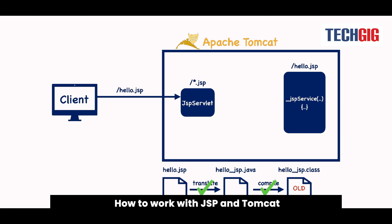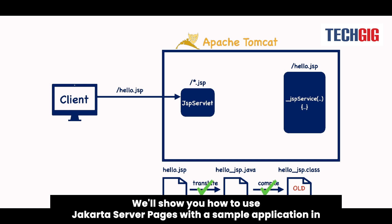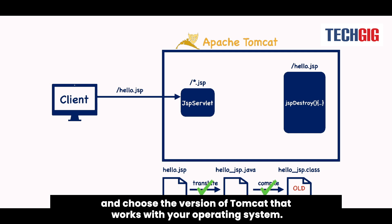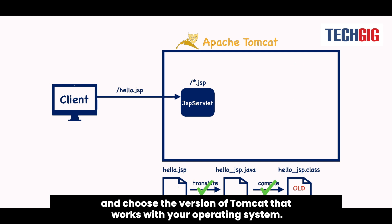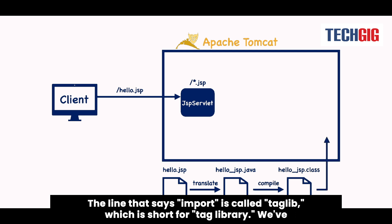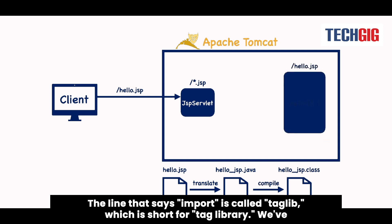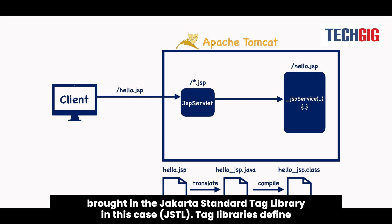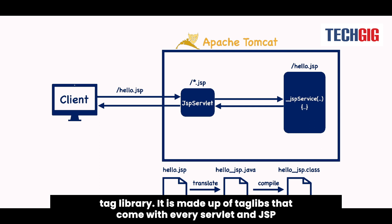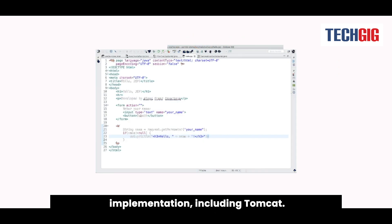We'll show you how to use Jakarta Server Pages with a sample application in Tomcat. If you haven't already installed Tomcat, go to the Tomcat download page and choose the version that works with your operating system. The Jakarta Standard Tag Library, JSTL, is imported using a taglib directive, which is short for tag library. Tag libraries define pieces of JSP functionality that can be used more than once. JSTL is the standard tag library, made up of taglibs that come with every servlet and JSP implementation, including Tomcat.